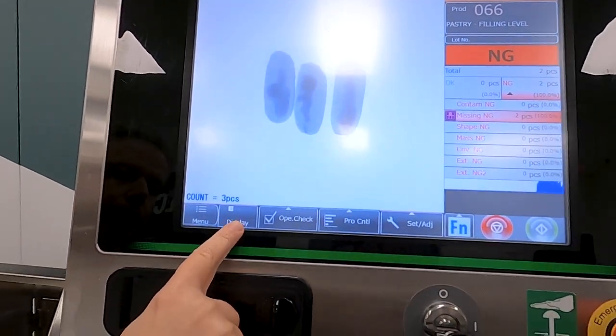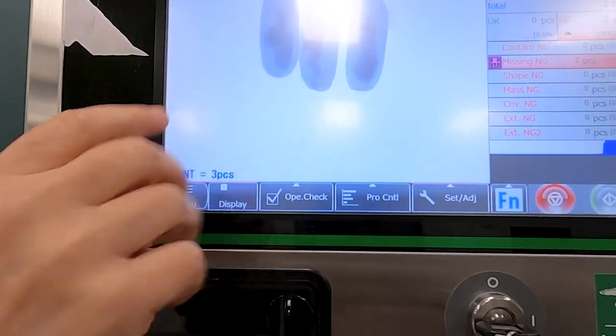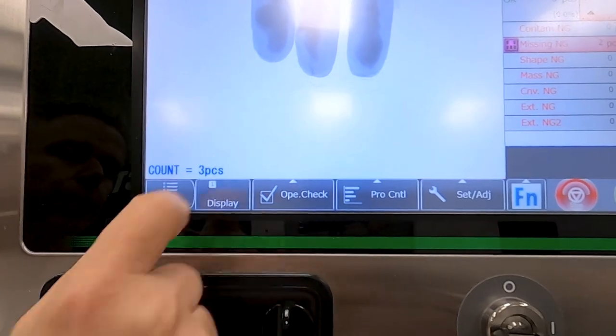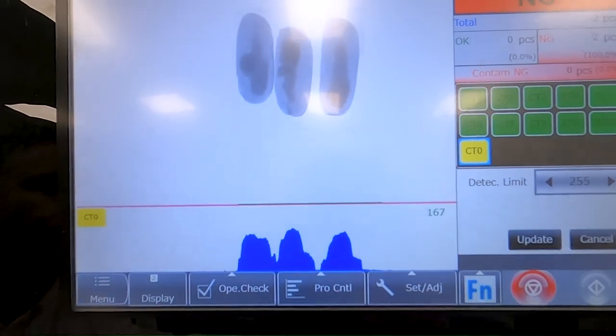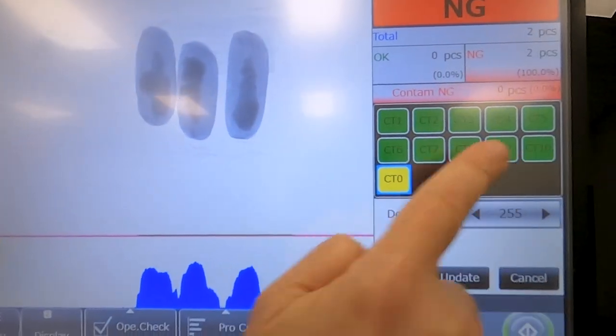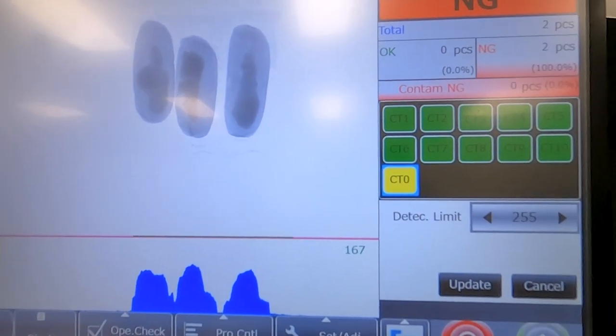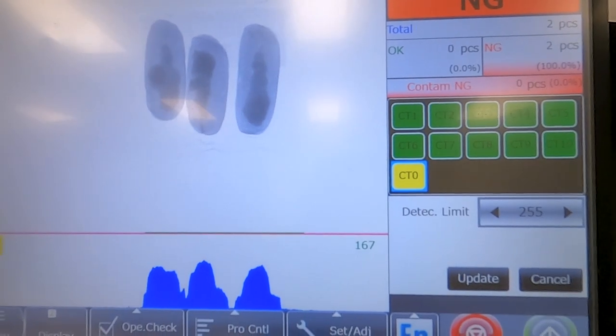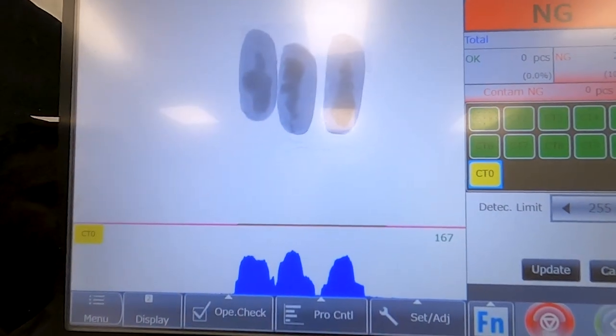So to get a better feel for how this works in the system, right here we have the main display. If we go to the second display, that's going to be details on the contaminants. If there were any contaminants in here, all of these different inspection tools would look to find any type and size of contaminant, including metal, wire, rocks, bones, ceramic, and so forth.